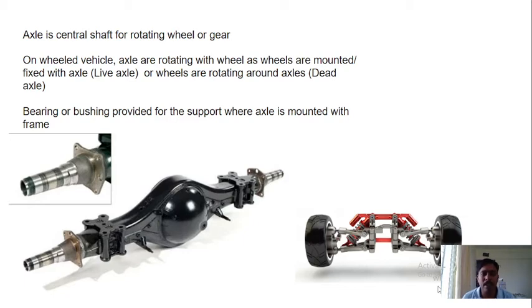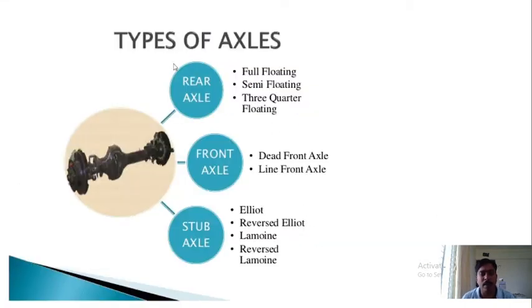Now, in case of rear axle, the axle is nothing but a central shaft for rotating the wheel. In case of rear axle, it can be a full floating axle, a semi floating axle, or a three quarter axle. Front axle is classified as a dead front axle or live front axle, and the front axle may have a stub axle. The types of stub axle are: Elliot, Reverse Elliot, Lamount, and Reverse Lamount.